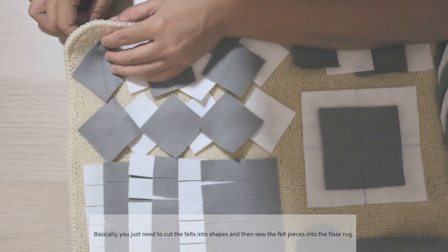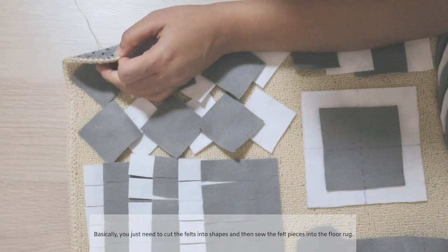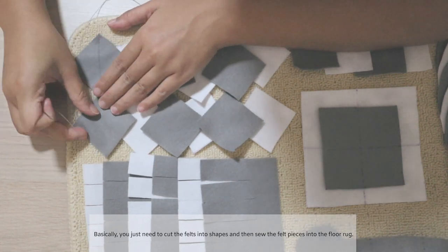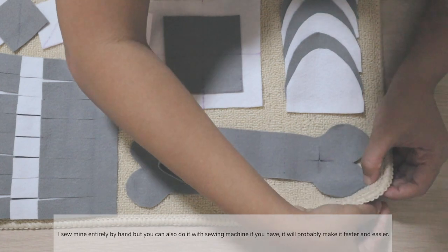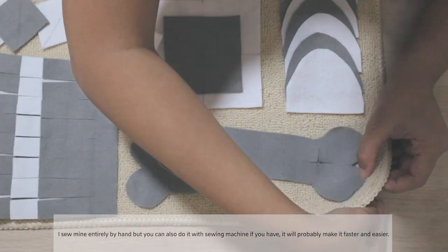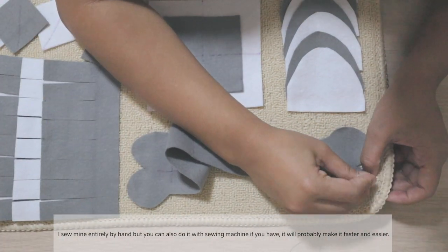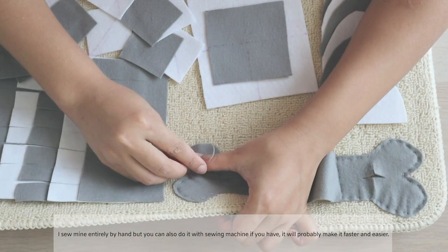Okay, so basically you just need to cut the felt into shapes and then sew the felt pieces into the floor rug. I sew mine entirely by hand but you can also do it with a sewing machine if you have one. It will probably make the process faster and easier.